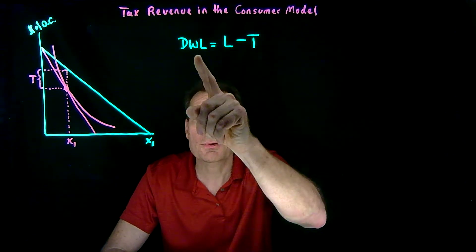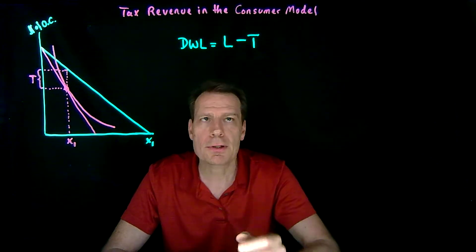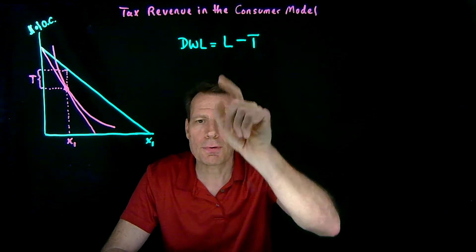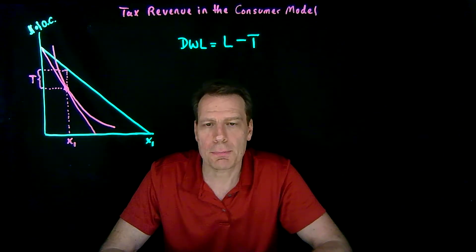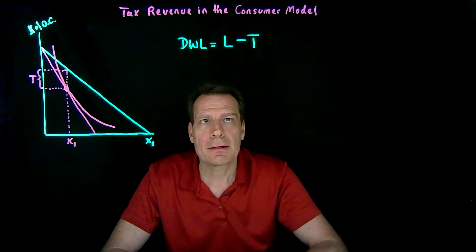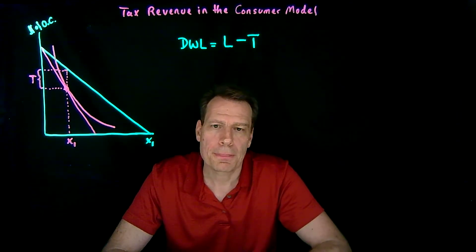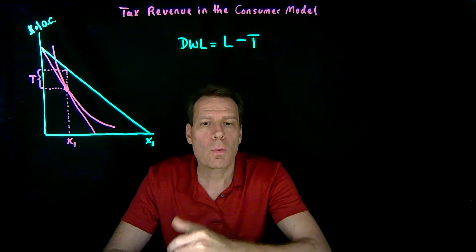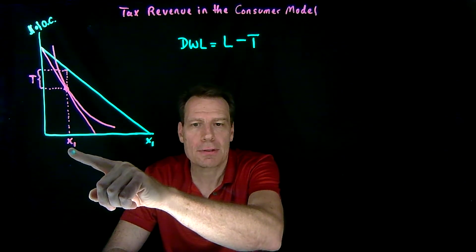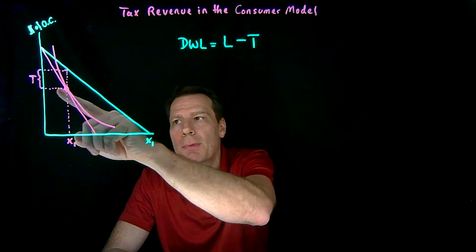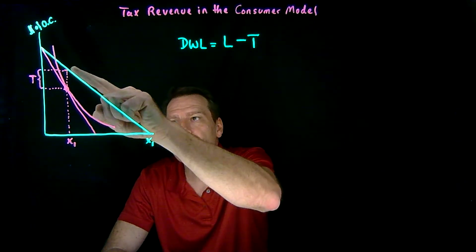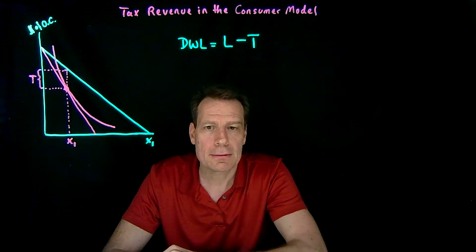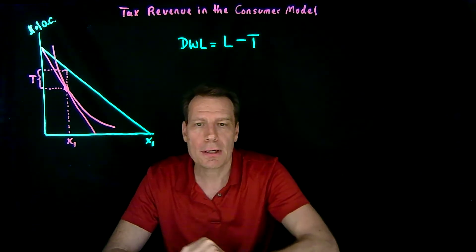In the previous module, we said that deadweight loss from a distortionary tax is equal to the difference between the actual tax revenue we raise from the distortionary tax and the amount we could have raised without making consumers worse off had we not distorted prices. We also identified how we can see T in this consumer diagram. On the after-tax budget, we identify our optimal bundle, and once we know how much the consumer consumes of the taxed good, we can see how much is left for other consumption and read off the before-tax budget how much she would have had left had she not paid taxes. That difference is the tax revenue the government collects from this consumer.